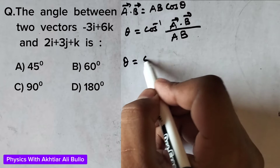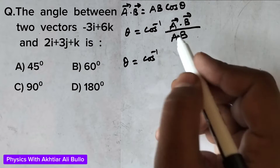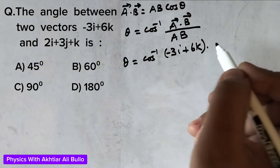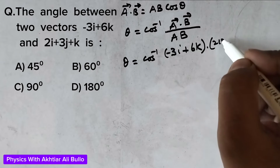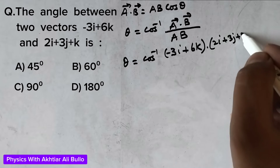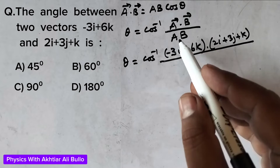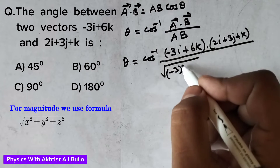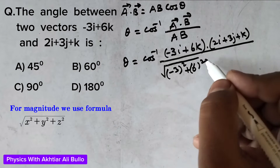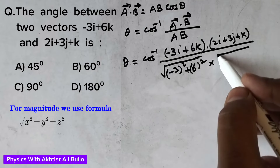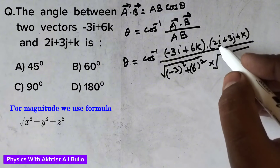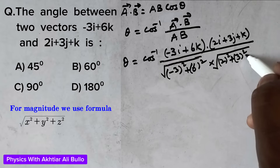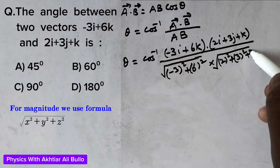So theta will be equal to cos inverse of: vector a, which is minus 3i plus 6k, dotted with vector b, which is 2i plus 3j plus k, divided by the magnitude of a — which is under root of (minus 3 squared plus 6 squared) — times the magnitude of b — which is under root of (2 squared plus 3 squared plus 1 squared).